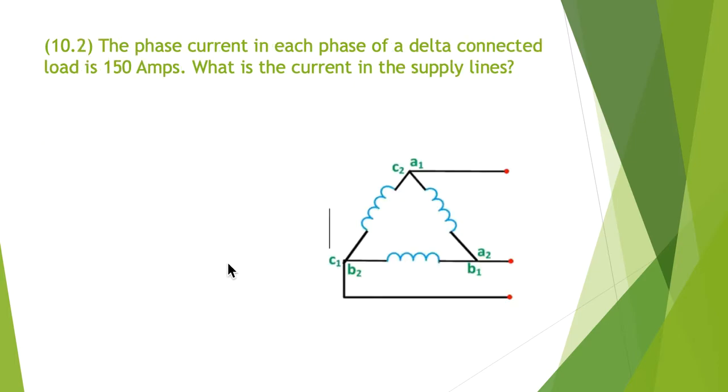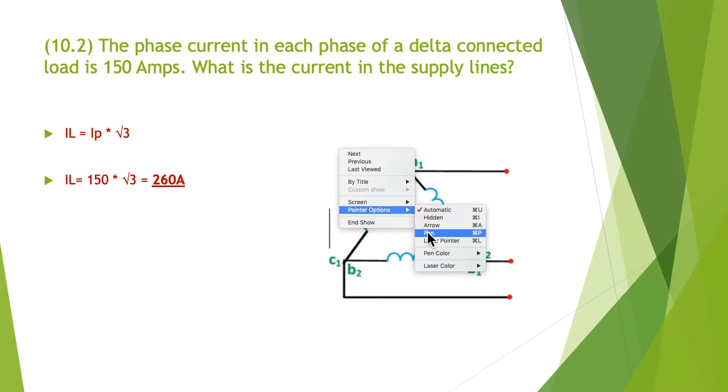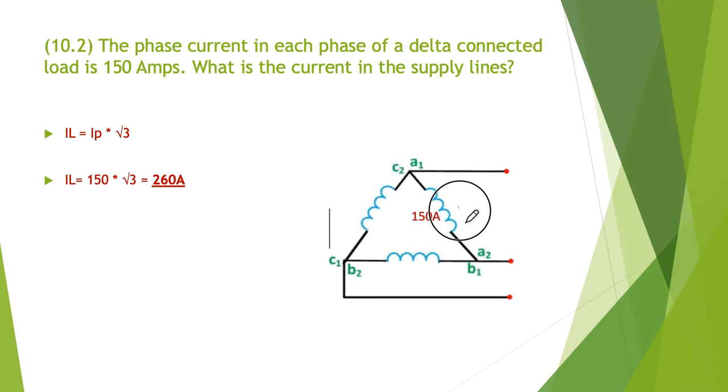Our next one, 10.2. The phase current in each phase of a delta connected load is 150 amps. What is the current in the supply? Draw the diagram. And in this particular case, they tell us we have 150 amps in each of the phases. And again, as we've just done in the previous exercise, we know that there is this root three relationship to I line.